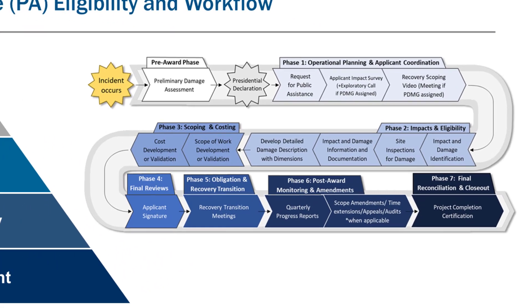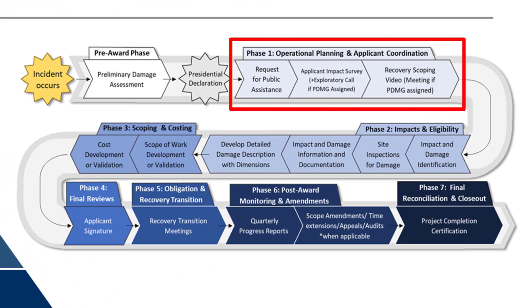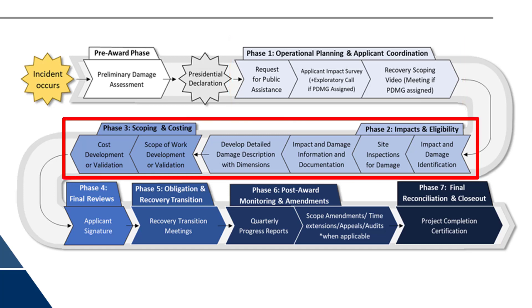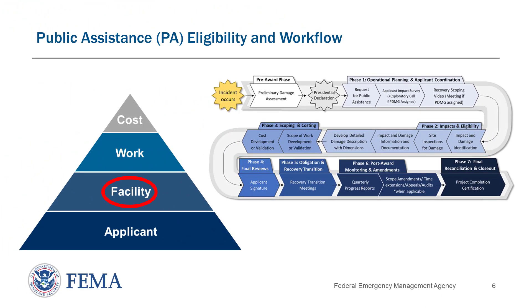There are a few phases within the PA grant workflow where a DM may be issued. In Phase 1, the applicant themselves could be determined to be ineligible for assistance — for example, if they are a private corporation or a private nonprofit that doesn't provide an eligible service. The DM could be issued at the applicant level after review of the Request for Public Assistance, or RPA, the Applicant Impact Survey, or the Exploratory Call. In Phases 2 and 3, damages and projects could be found ineligible during the different reviews. Ineligibility could be related to the facility, the work performed to repair facilities back to pre-disaster condition, or the individual costs claimed. Projects could be found ineligible as a whole or in part. The DM will define which costs are ineligible, and FEMA will provide the policies or laws that support their decision. If the applicant disagrees with an ineligibility determination, they may submit an appeal.